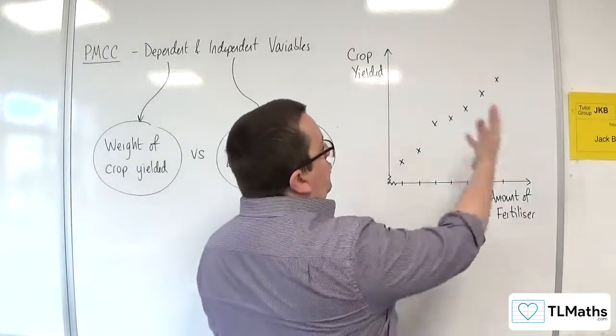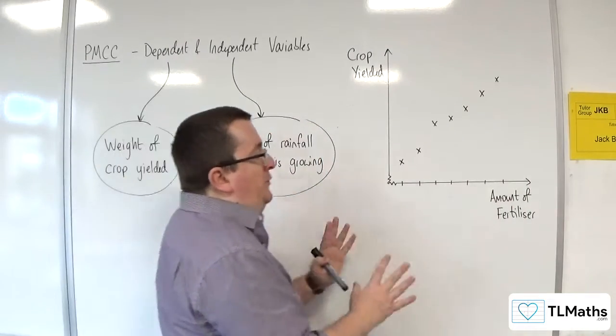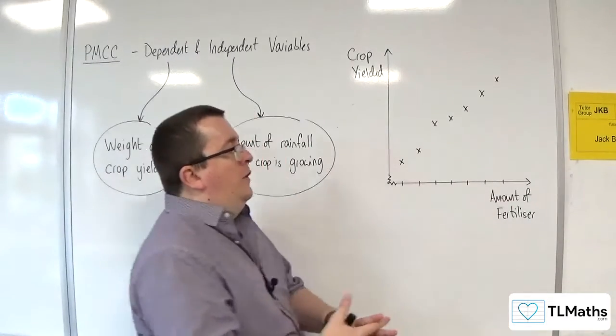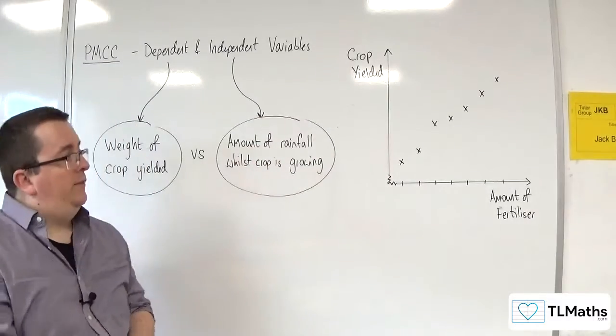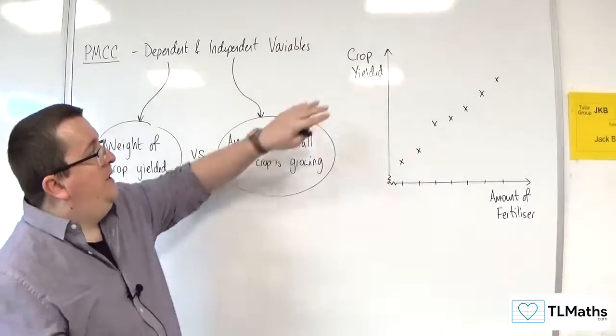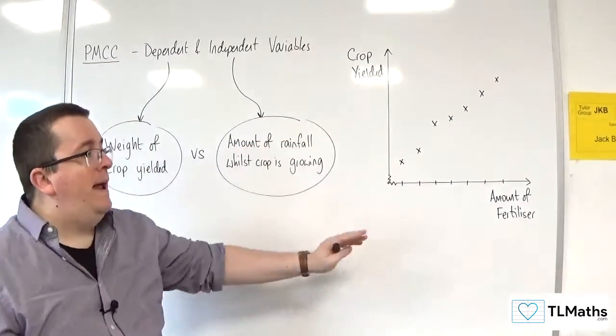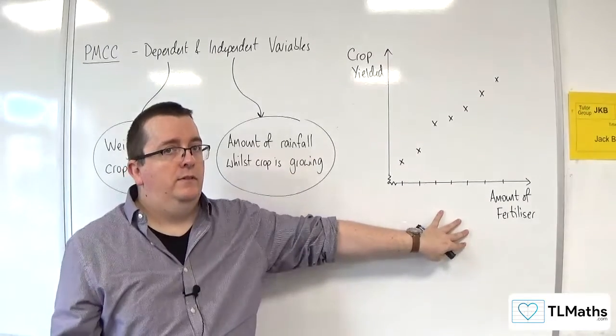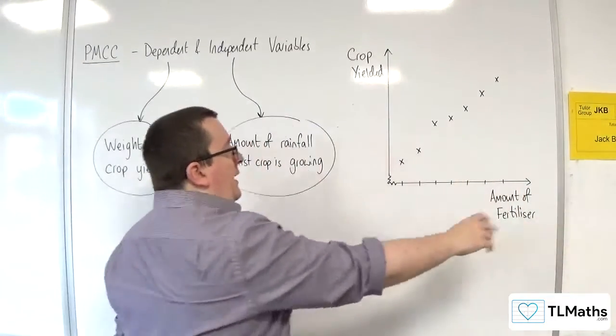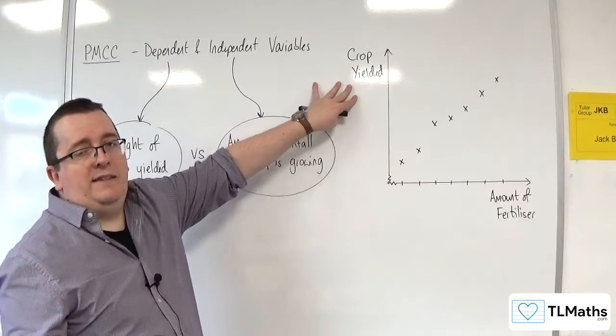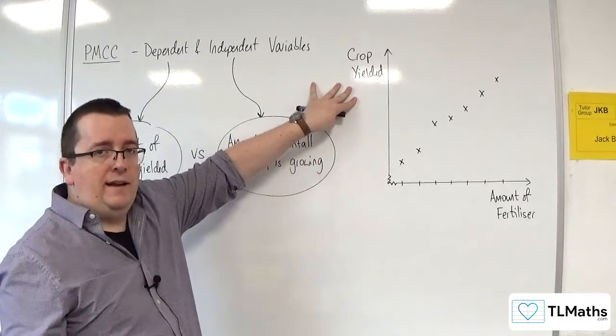In this example, I've drawn a scatter graph where I've got the amount of fertilizer along the horizontal axis and the crop yielded on the vertical axis. The amount of crop yielded would depend on the amount of fertilizer that's used. So the amount of fertilizer is the independent variable on the horizontal axis, and the crop yielded is the dependent variable on the vertical axis.